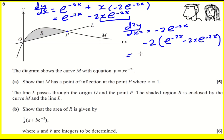Okay, just tidy this up. That's going to become plus 4x e to the minus 2x. Okay, there is our second derivative.